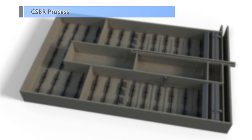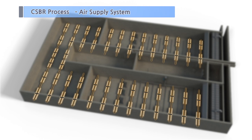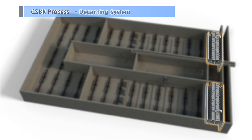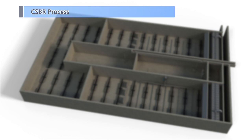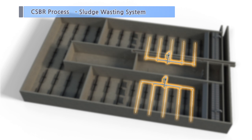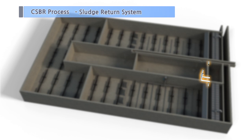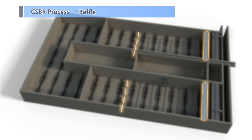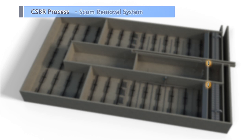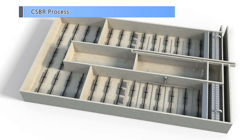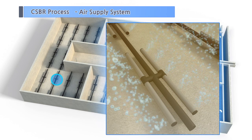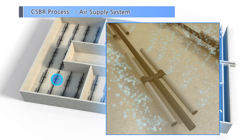The CSBR process consists of equipment including the air supply system, decanter, sludge wasting system, mixer, return, baffle, and scum removal system. The air supply system feeds air through diffusers, which are installed at the bottom of the cell, to remove organic matter, nitrogen, and phosphorus.